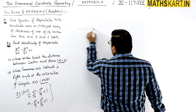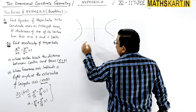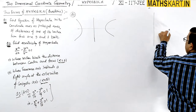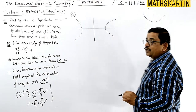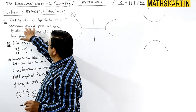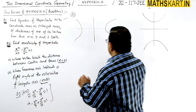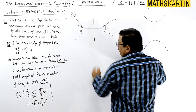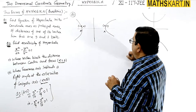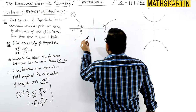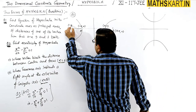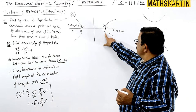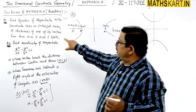First, we take a transverse hyperbola. For a transverse hyperbola, the vertices are at (a, 0) and (-a, 0), and the foci are at (ae, 0) and (-ae, 0). The distance of one of its vertices from the foci are 9 and 1. We will work with these distances for the vertex.